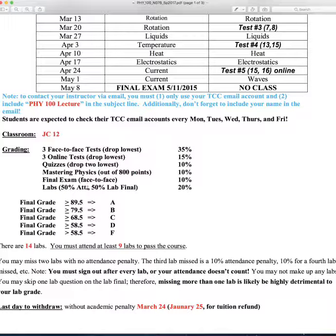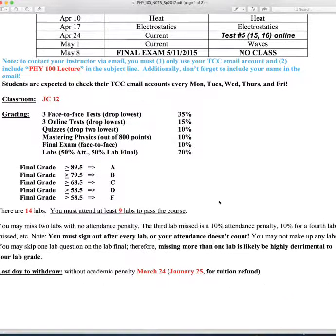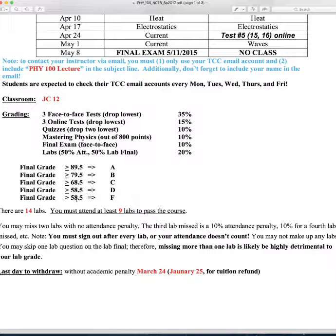Basically, if you attend every day, you'll get a full 50 points for attendance. If you got an 80 on your lab final, you'd average 80 plus 100 divided by 2, giving you a 90. The lab counts as 20% of your course grade. The final exam is worth 10% and is face-to-face. My grade scale is roughly a 10-point scale: 89.5 and higher is an A, 79.5 is a B, 68.5 is a C, 58.5 is a D, and below that is an F.